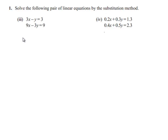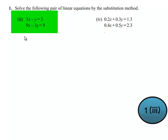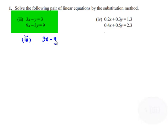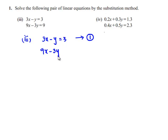Now coming to the third bit, which is 3x minus y is equal to 3. Let this be equation number 1, and the other one is 9x minus 3y is equal to 9. Let this be equation number 2.